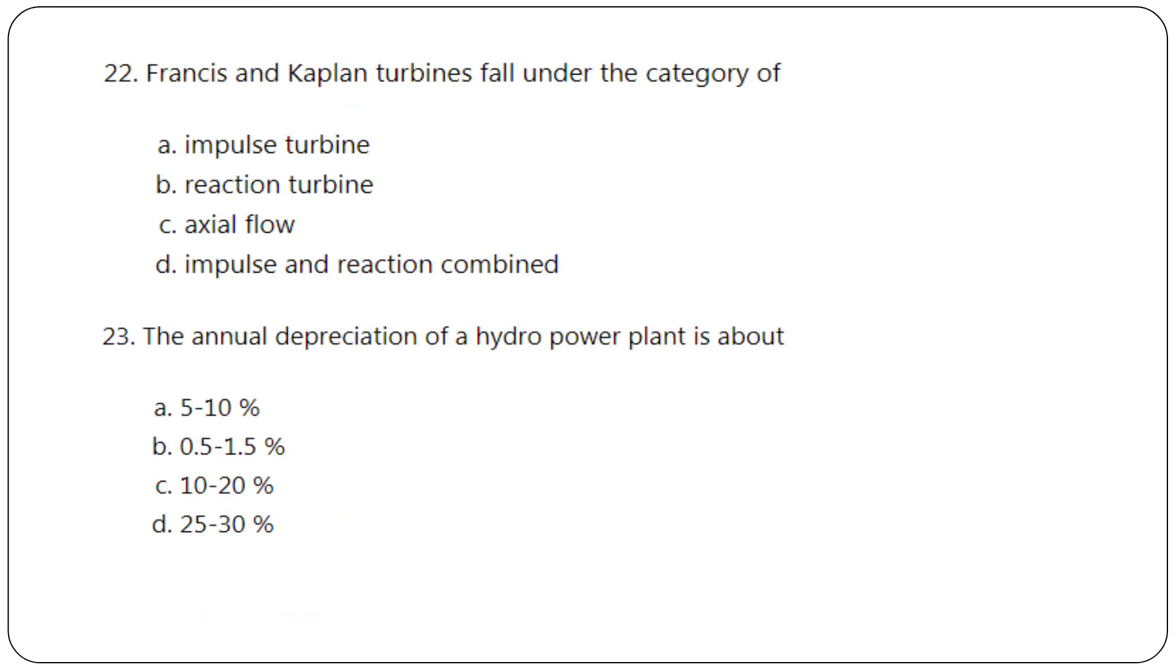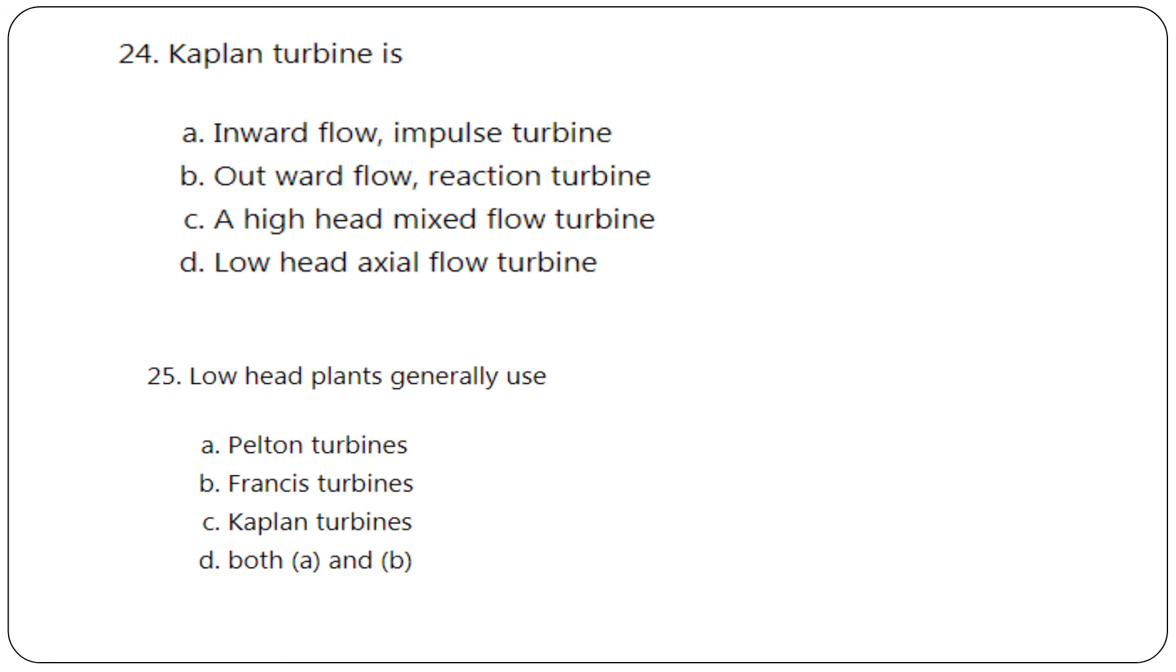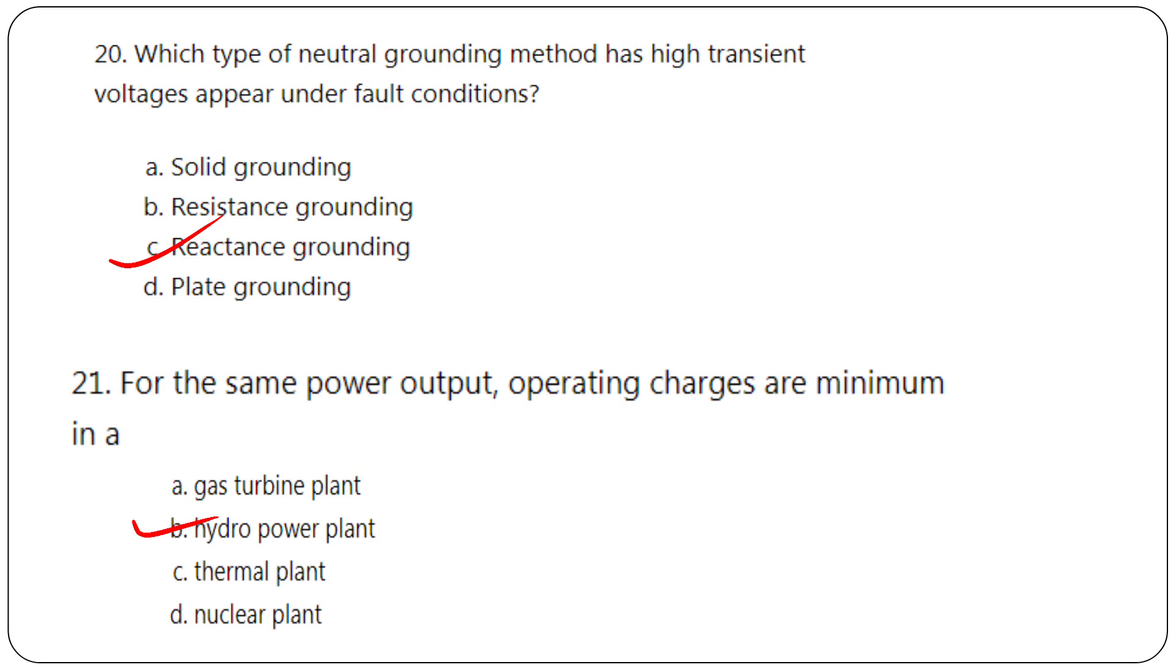Francis and Kaplan turbines fall under the category of reaction turbine. The annual depreciation of a hydro power plant is about 0.5 to 1.5 percentage. Kaplan turbine is a low head axial flow turbine. Low head plants generally use Kaplan turbine.